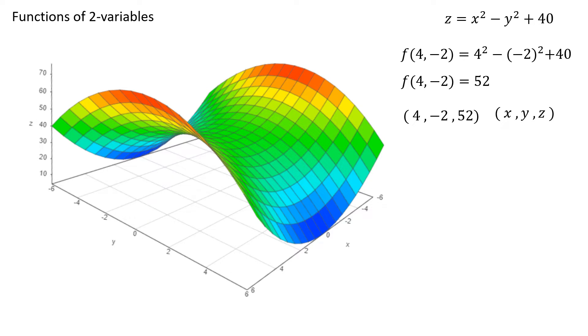To analyze more deeply what the point 4, negative 2, 52 would look like, we're going to look at our x, y, and z-axis here and analyze these numbers. First of all, the point 4, negative 2 in the xy-plane would be right here.